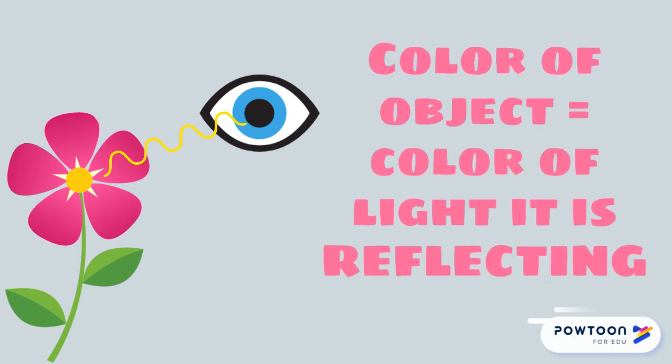Black objects reflect no light, so you see no color. White objects reflect all the colors of light, which makes whiteness.